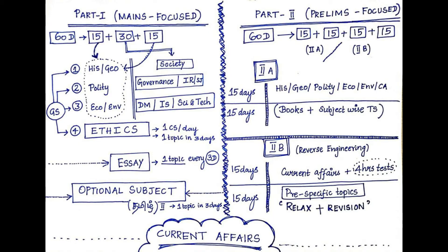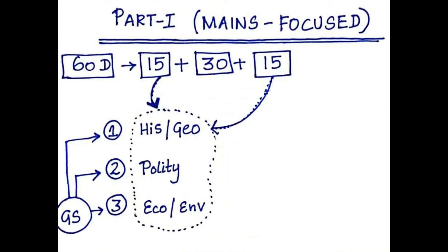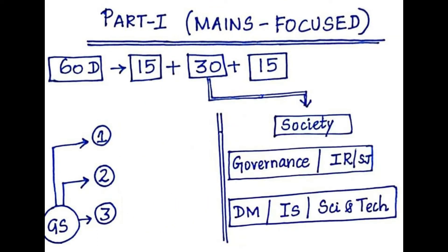Let's now go deep into part 1 where we have 60 days and it is fully mains focused. I am dividing this into 15 plus 30 plus 15 days. In the first 15 days, I would warm up myself with the commonly known subjects. As we all know that GS has 4 papers, my focus would be as follows. In GS1, I would focus with respect to history and geography, with respect to GS2 on polity and with respect to GS3 on economics and environment. So, we can have a basic reading of these 5 subjects in 15 days. Take 5 days for a subject and you are good to go.